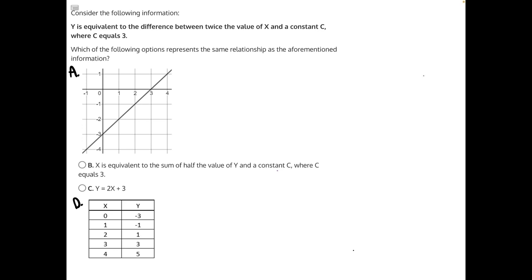Let's start by translating this sentence into a mathematical equation. We have y is equivalent to the difference between twice the value of x, or 2 times x, and a constant c, so minus c. And we know c is equal to 3, so we can say y is equal to 2x minus 3. That is our equation, and we can use that to figure out which one of our answers matches this equation.